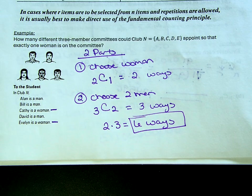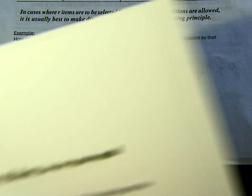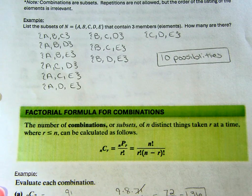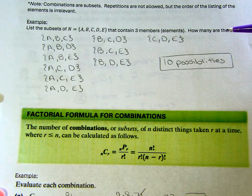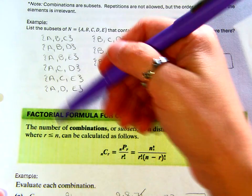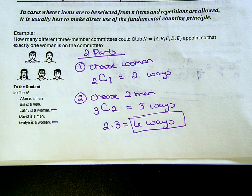We could go back to our list of ten subsets and identify which ones have C (Kathy) or E (Evelyn) but not both, and count those to verify. Listing isn't bad for small groups, but the two-part combination approach — choose the woman first, then choose the two men — gives us six possible committees, which scales to larger problems where listing would be impractical.